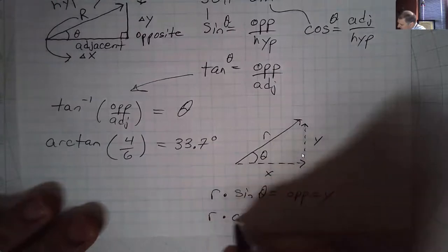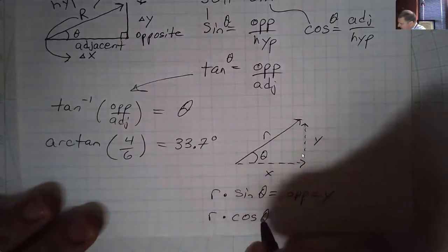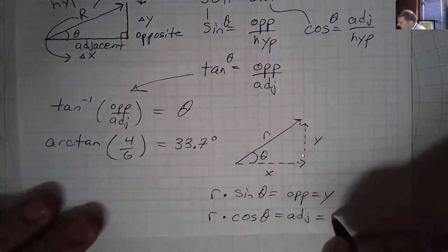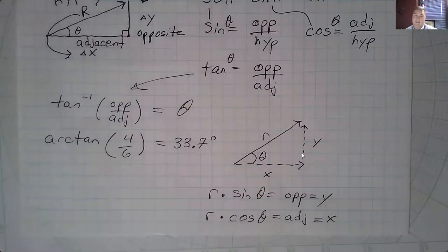then r times sine of theta equals opposite, which would be my y, and r times cosine of theta would be equal to my adjacent, which is my x.